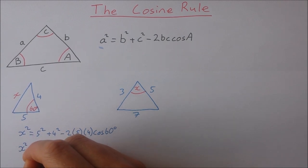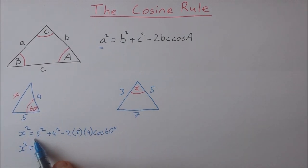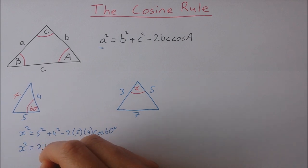So x squared is equal to... now you can just type this all straight into your calculator as you see it here. So 5 squared plus 4 squared minus 2 times 5 times 4. Just be careful to use brackets here for these ones. Cosine 60 and that should work out to be 21.